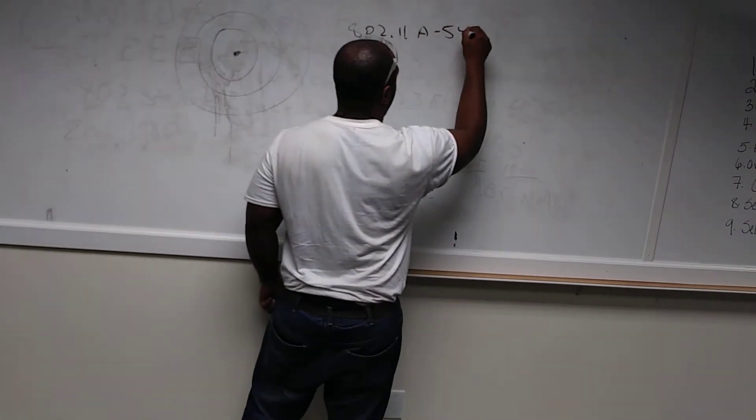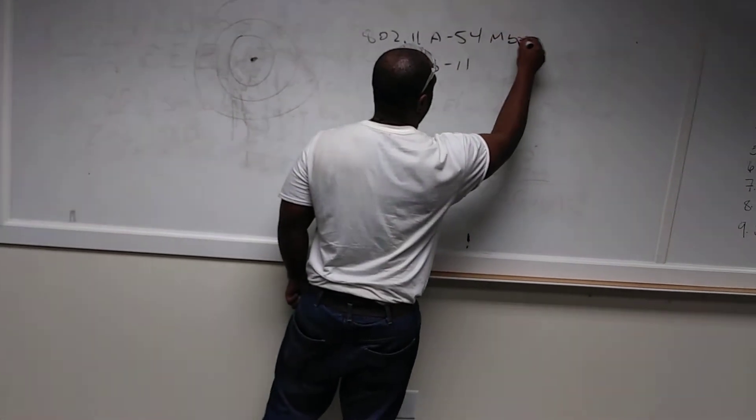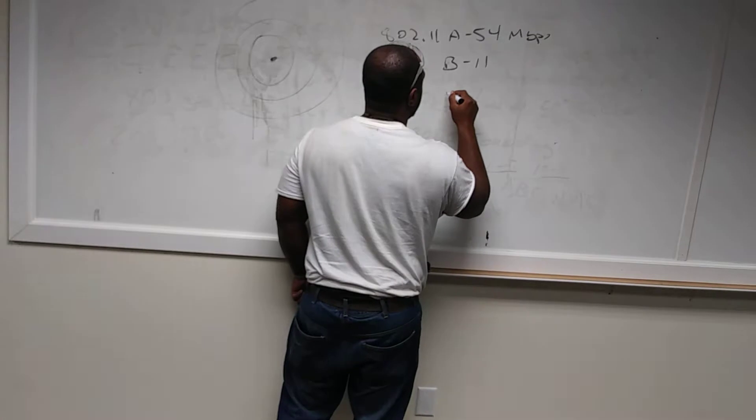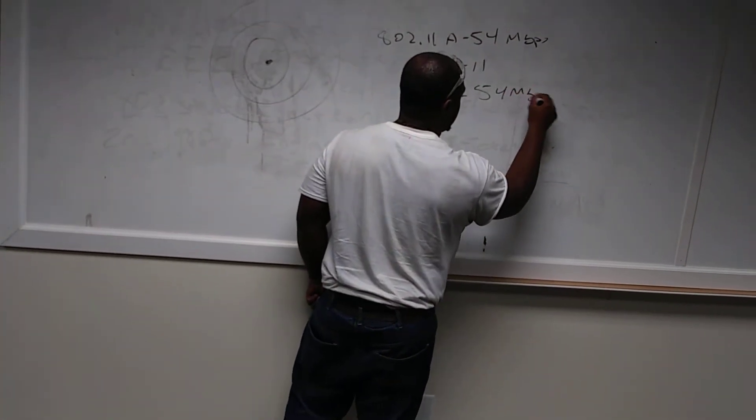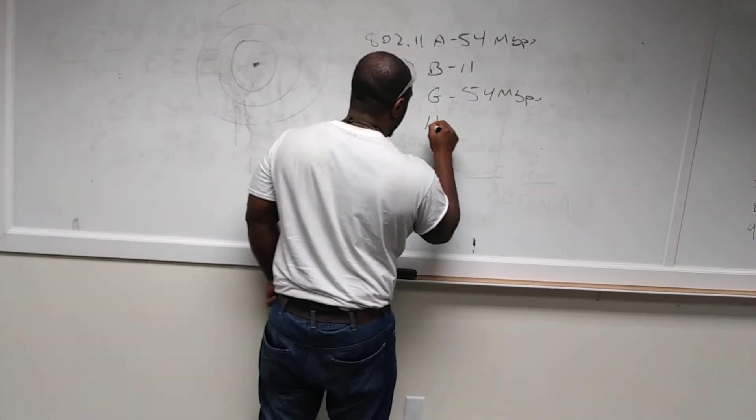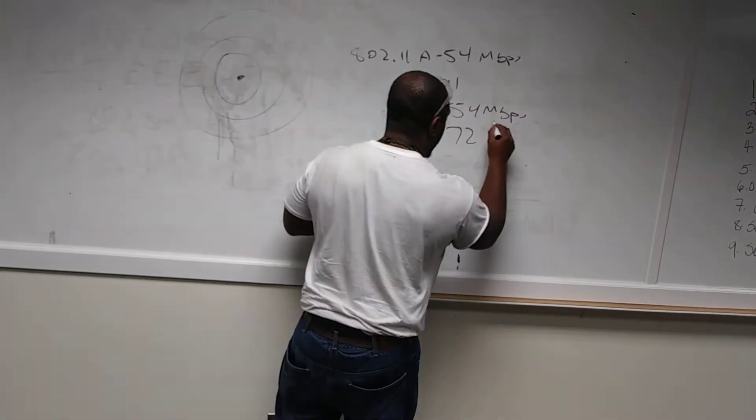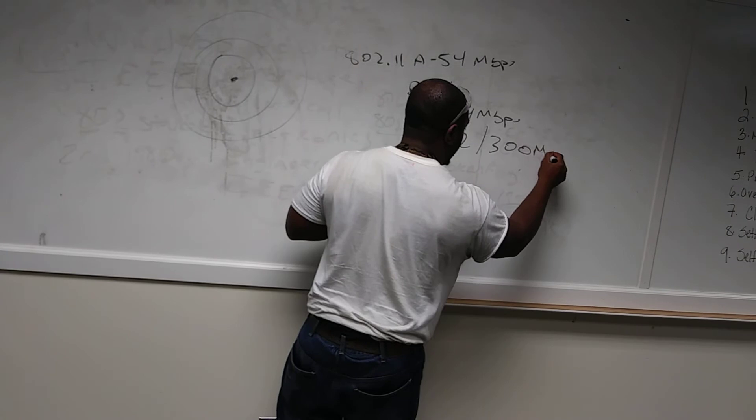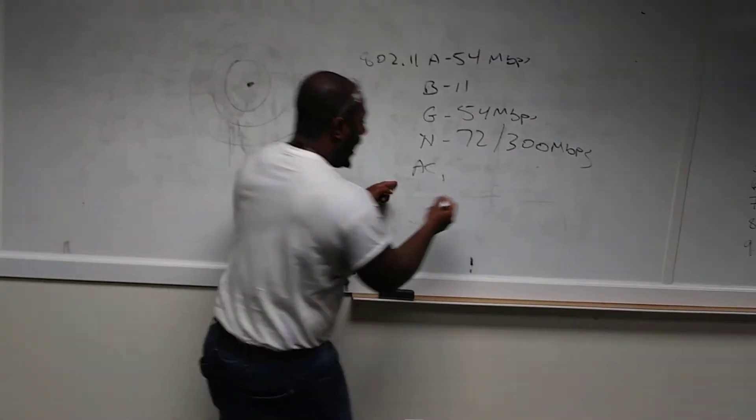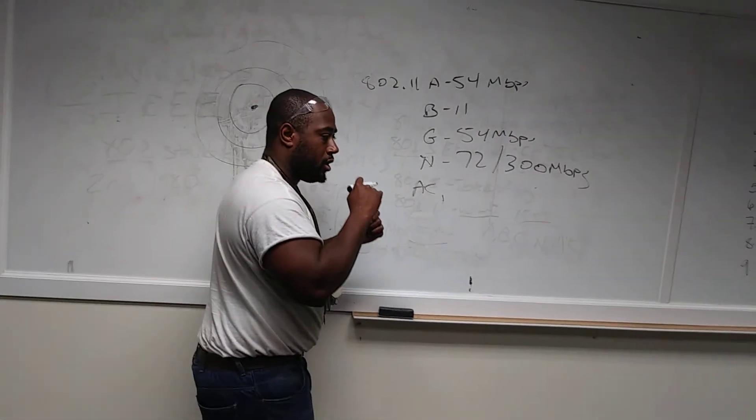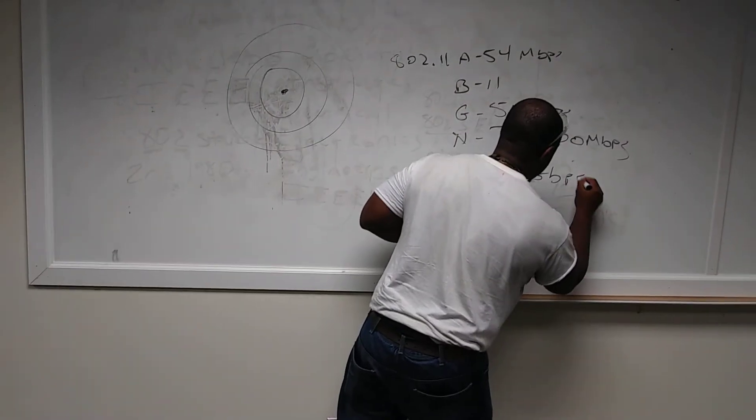Each amendment does something different. It has a different throughput of megabits per second. A has a maximum transfer rate of 54 megabits per second. B has a maximum transfer rate of 11 megabits per second. G has a maximum transfer rate of 54 megabits per second. N has a maximum transfer rate of 72 megabits per second and 300 megabits per second. And AC, which is the newest standard, has a maximum transfer rate of 1.3 gigabits per second.